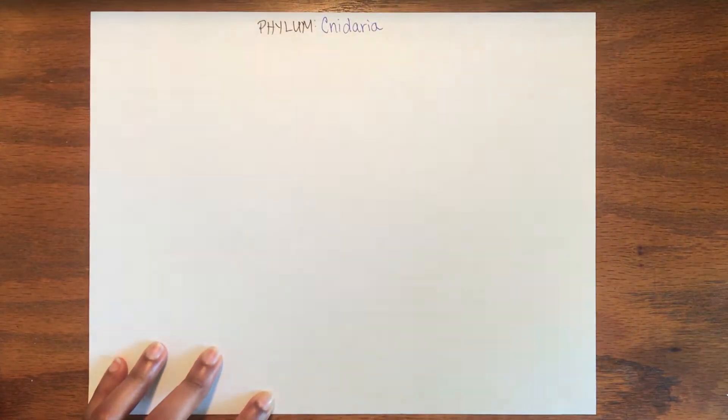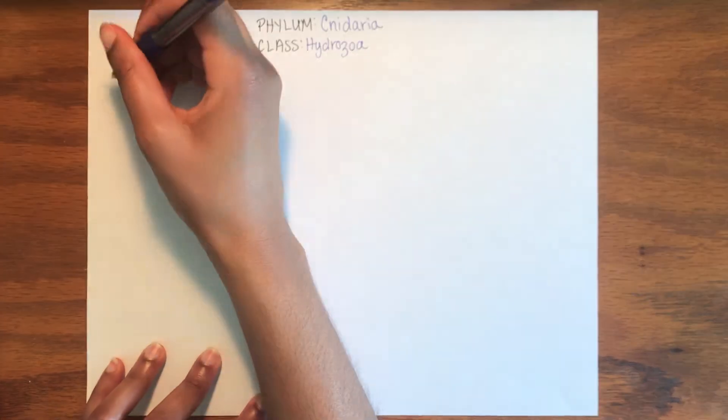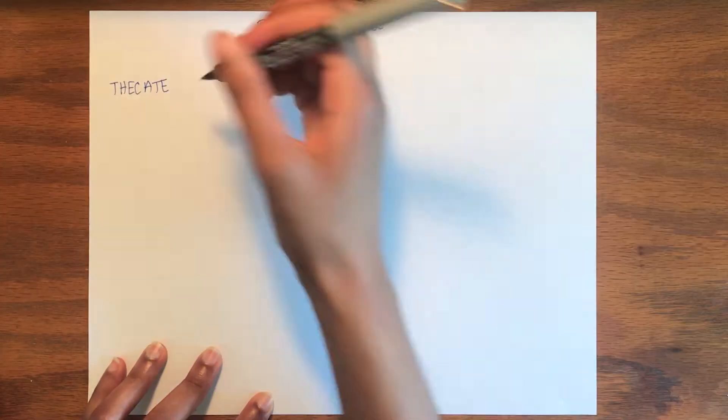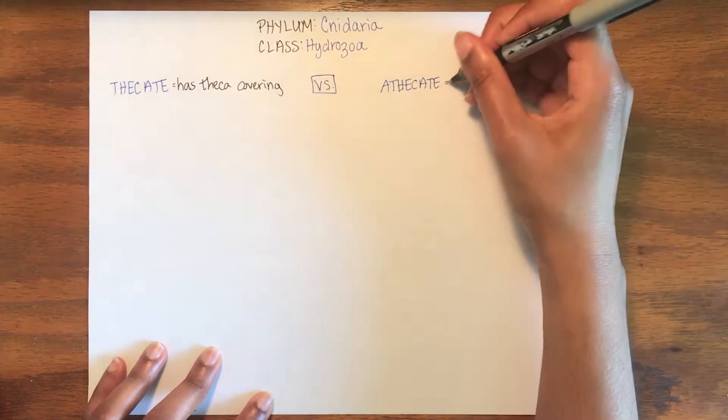Now it's time to learn a little bit more about the features and morphology of hydroids. For this exercise, we are going to be comparing thecate hydroids with a theca covering and athecate hydroids without a theca covering.